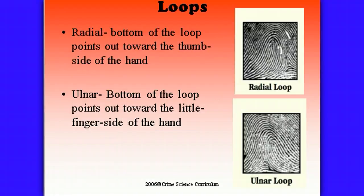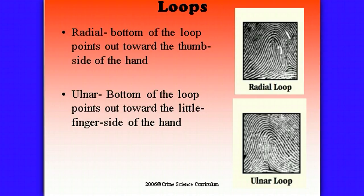When we look at loops, there can be two different types: a radial loop or an ulnar loop. If you take your hand and look at it right now, where your thumb attaches to your forearm, that bone in your forearm is called the radius. Your pinky attaches to the ulnar side of your forearm. So when we're looking at the loop, you want to look at whether the bottom of the loop points out towards the thumb side of the hand or towards the pinky side. What's tricky is which way the hand is facing — because when you leave an impression, are you looking at the exact image or a mirror image? That's going to be one of the issues that comes up when we start to do our fingerprinting lab techniques.